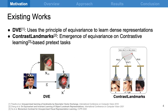This model could also be used as a feature extractor to train a shallow model on a small-scale annotated dataset. Existing methods like DVE follow the principle of equivalence of features across warped images. Recent work on contrast landmarks investigated the emergence of equivalence representations from contrastive learning-based pretext tasks. DVE's representation does not scale up as the representation dimension is increased, and in the case of contrast landmarks, the MoCo framework is utilized, which incurs the cost of negative images.